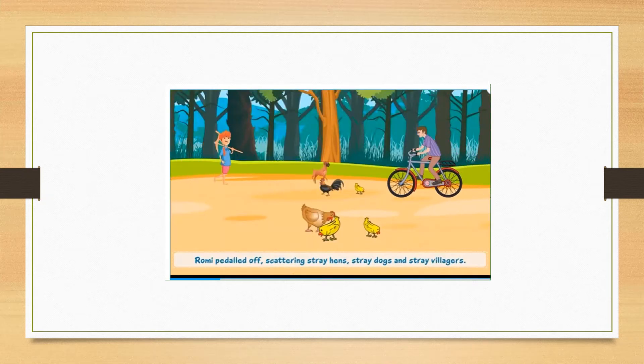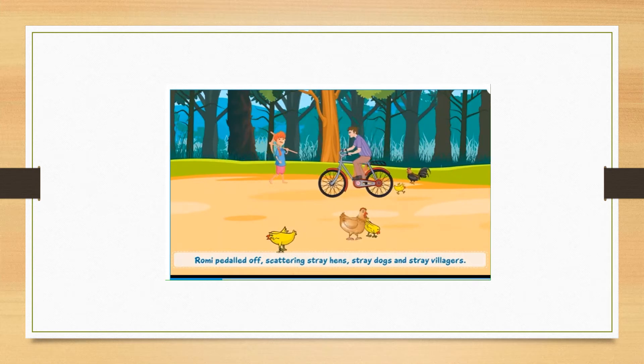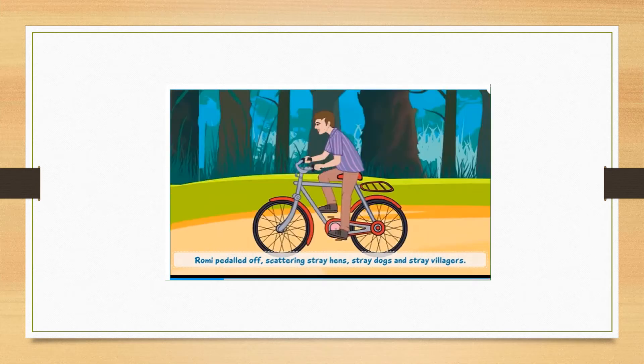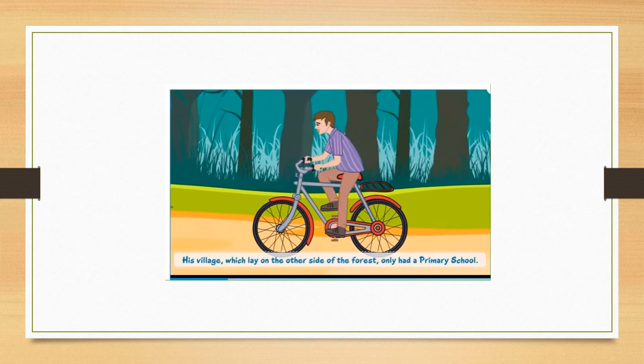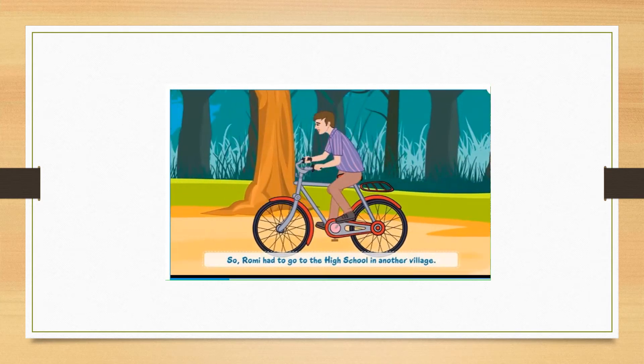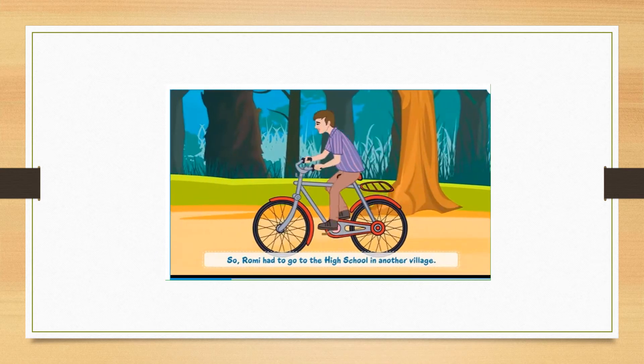Romy pedaled off, scattering stray hens, stray dogs, and stray villagers. His village, which lay on the other side of the forest, only had a primary school. So, Romy had to go to the high school in another village.